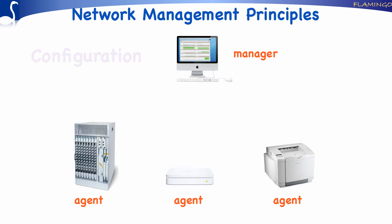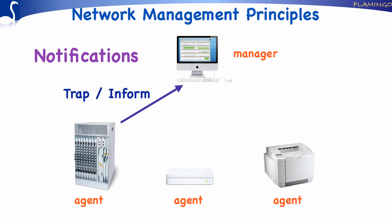Finally, agents may be able to autonomously signal certain events to the manager, for example, in case an interface went down or the device has been reset. In the first version of SNMP, agents could signal only a limited number of events to the manager using the TRAP PDU. In later versions of SNMP, the capabilities for agents to notify all kinds of events have been extended. For that purpose, a new PDU was introduced, the INFORM PDU, which is acknowledged by the manager, so the agent knows the manager is aware of the event.